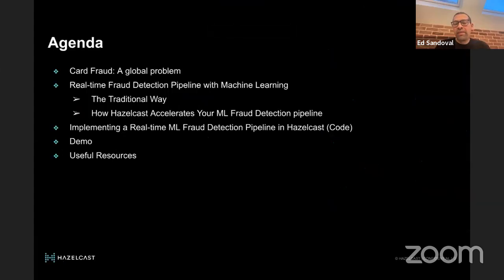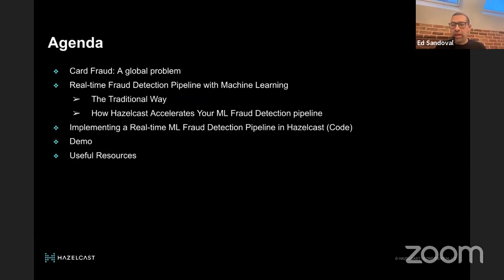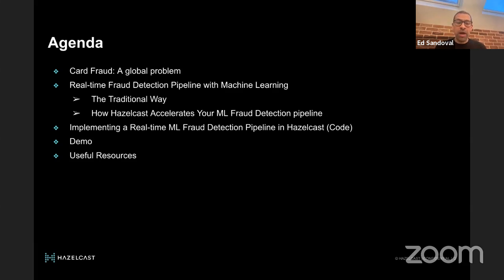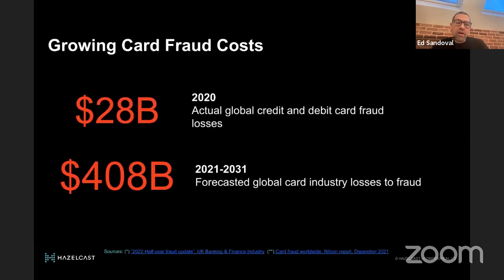Today's agenda is to set the context and talk about machine learning and fraud detection, and how it can be done with Hazelcast. Fraud detection is nothing new — companies are implementing it today. After this talk I'll give you some insights into what it takes to implement this. We'll be looking at some code in the fraud detection pipeline and finish with a demo of how to implement a fraud detection pipeline using machine learning in Hazelcast.